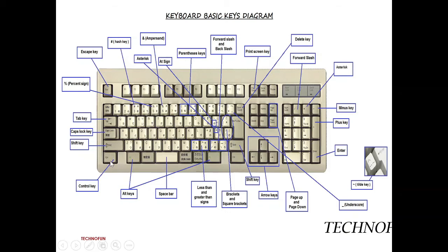This is the control key. It is always used in a combination — Control plus C for copy, Control plus V for paste. And this is the space bar key. This is the ALT key, also called the alternate key. The ALT key is always used in a combination; for example, if you press F it will type F, but if you press ALT plus F, then it will open a file.